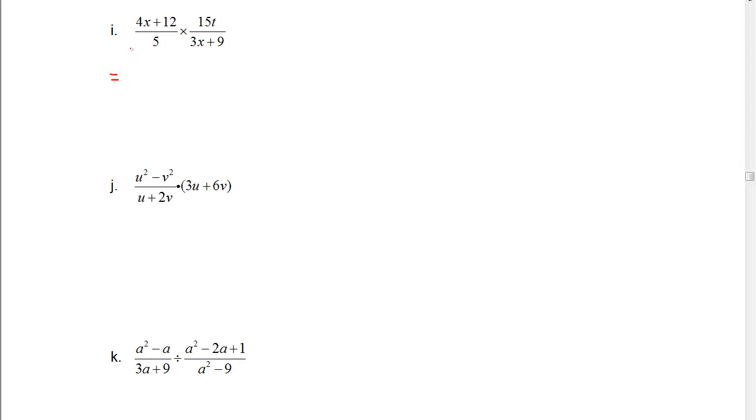So remember we want to factor everything first. So 4 is a common factor. That leaves x plus 3 over 5. Multiply that, we'll change that to a dot so we don't confuse the x's.